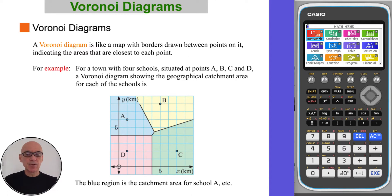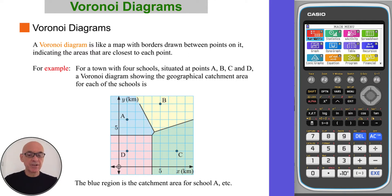For example, for a town with four schools situated at points A, B, C and D, a Voronoi diagram showing the geographical catchment area for each of the schools is shown here. The blue region is the catchment area for school A, the yellow region is the catchment area for school B, and so on.